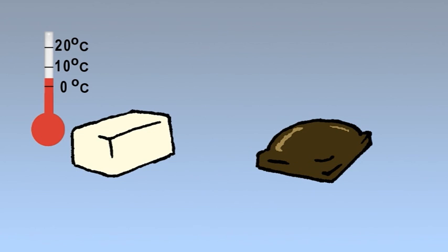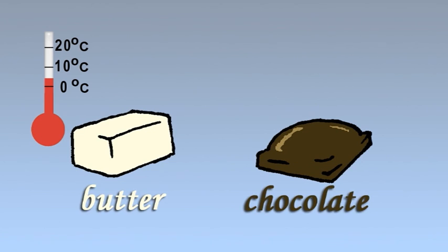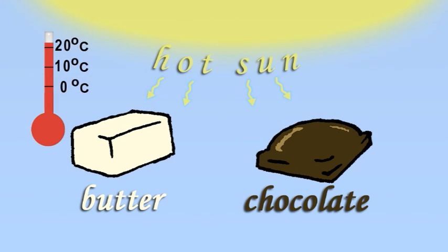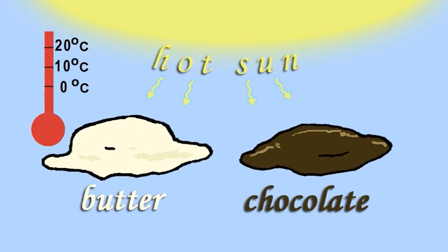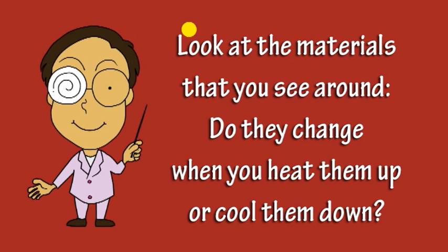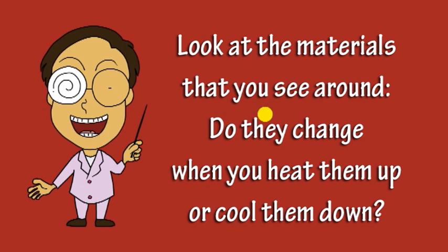If every piece of chocolate and butter that you've got is way too hard, then warm it up till it's very soft. Look at the materials that you see around — do they change when you heat them up or cool them down?